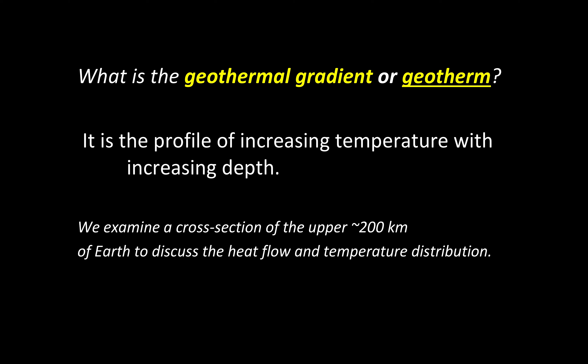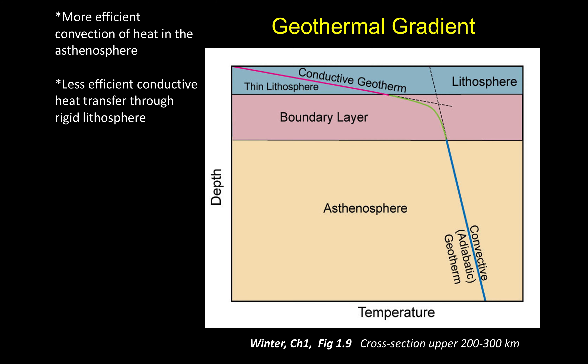We're going to look at a cross section of the upper two to three hundred kilometers of earth. This image from Winter's textbook, figure 1.9, shows us two lines.